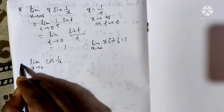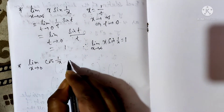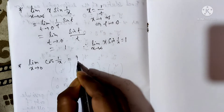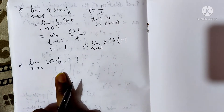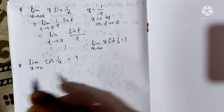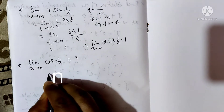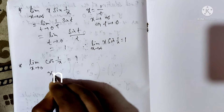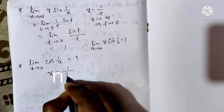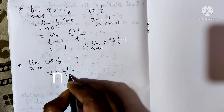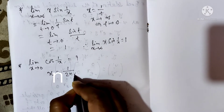Now let us solve: what is the value of the limit as x tends to 0 of cos(1/x)? Let us take x equals 1/(2nπ).